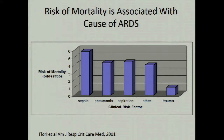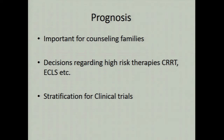Why is prognosis important? We have looked further into factors that predict mortality in individual patients — it is important for counseling families and for making decisions about whether patients should be subjected to high-risk therapies like CRRT or ECLS. And hopefully in the future for stratification in clinical trials — identifying which patients should receive a particular treatment.